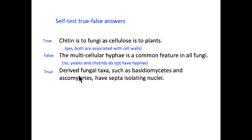The first statement is true: chitin is to fungi as cellulose is to plants — both are associated components of cell walls. The second statement is false: not all fungi have hyphae. Chitrids do not have hyphae, and yeast also do not have hyphae. The third statement is correct: derived fungal taxa such as the basidiomycetes and ascomycetes have septa isolating the nuclei.